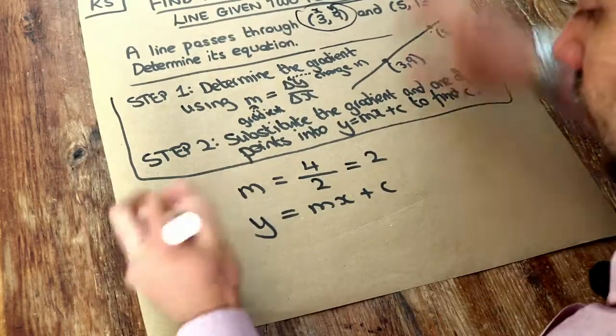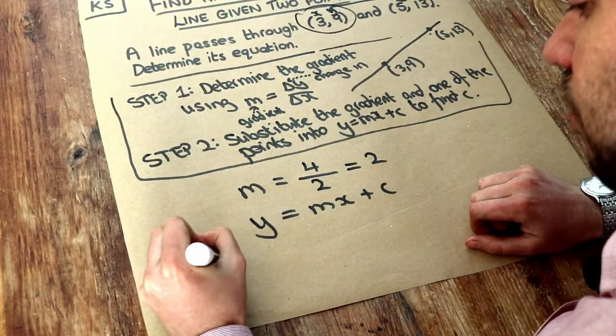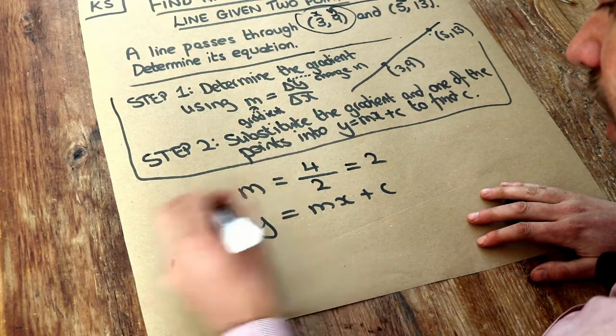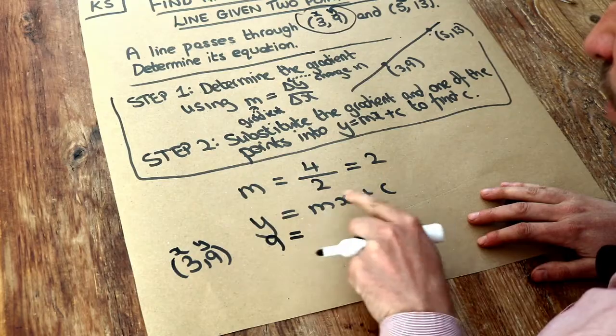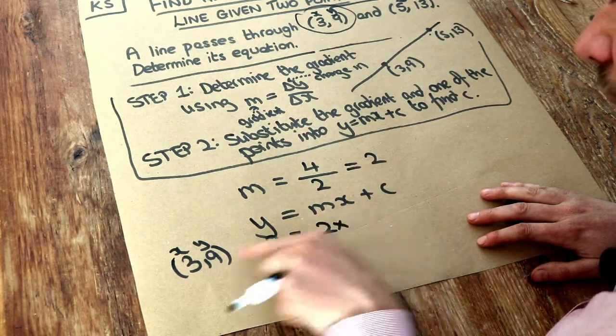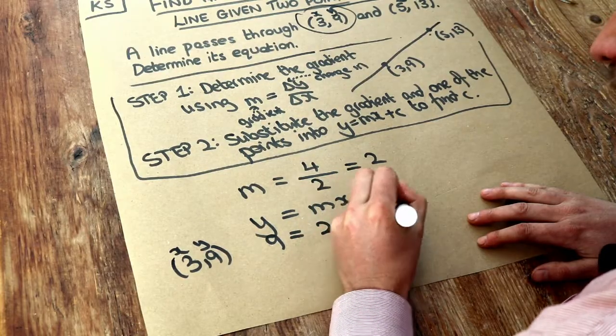So, if we substitute the (3,9) and the gradient of 2 into this equation, we have y is 9. So, 9 equals mx, so m, which is 2, times by x, which is 3, plus c.